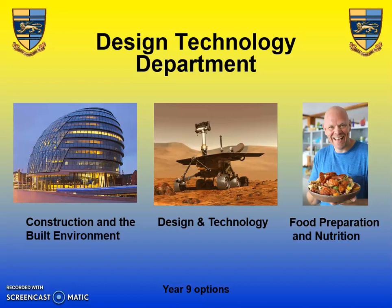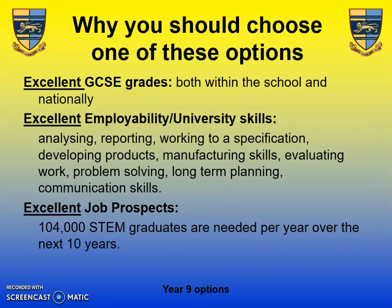Welcome to the Design and Technology Department. I'm now going to talk about the three options available for you to choose at GCSE: Construction of the Built Environment, Design and Technology, and Food Preparation and Nutrition. By selecting one of these courses we can offer you the opportunity to access some really good grades, develop employability and university skills, and there are many excellent job prospects through pursuing one of these options.